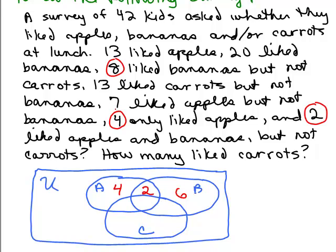Seven liked apples but not bananas — those two regions have to add up to 7. One of those regions already has 4, so the other must be 3, since 4 plus 3 equals 7. Now can we do 13 liked apples? I've got 4, 2, and 3 placed, plus one remaining piece — 4 plus 2 plus 3 is 9, so that last piece must be 4 to make the total 13. I've now used that piece of information.